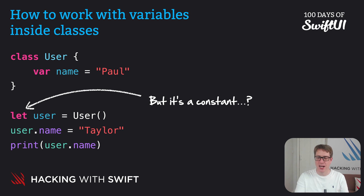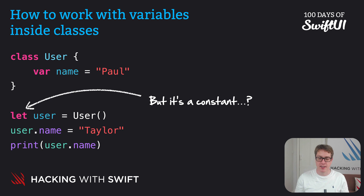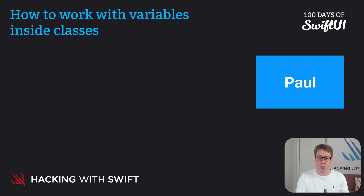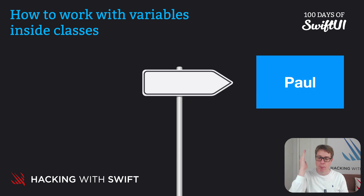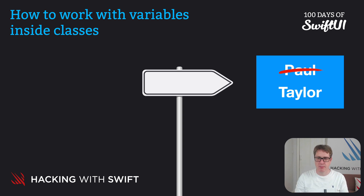Except we aren't changing the constant value at all. The data inside the class has changed, but the actual class instance itself — the object we created — has not changed, and in fact can't be changed because we made it a constant. Think of it like this: we had some data, a person with the name Paul, and we created a constant sign pointing at that person. But we scribbled our person's name on the name tag and wrote a new one in: Taylor. The user in question hasn't changed — it's the same person, we just changed their name tag. And the sign still points in their direction.